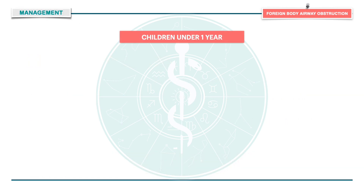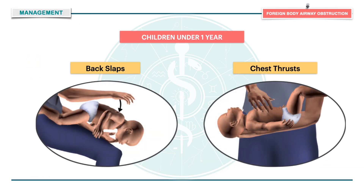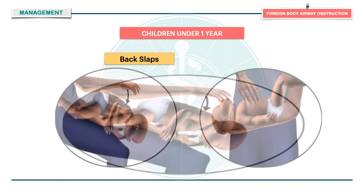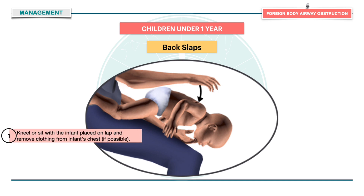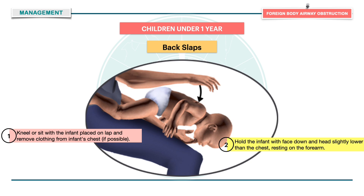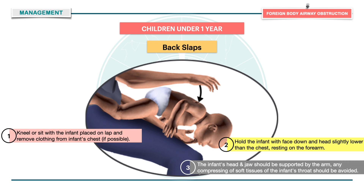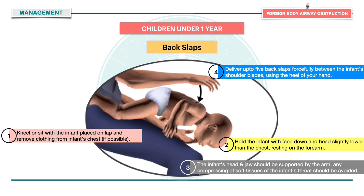In the case of children under one year, a combination of back slaps and chest thrusts is required. Kneel or sit with the infant placed on your lap and remove clothing from the infant's chest. Hold the infant face down with the head slightly lower than the chest, resting on the forearm, supporting the head and jaw while avoiding compression of the soft tissues of the infant's throat. Deliver up to five back slaps forcefully between the infant's shoulder blades using the heel of your hand, each forceful enough to dislodge the foreign object.